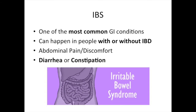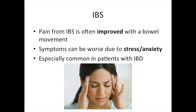Let's talk about IBS first. IBS is one of the most common GI conditions and can happen in people with IBD and in people without IBD. IBS generally manifests as abdominal pain or discomfort that is generally associated with diarrhea or constipation. The pain often is improved or can go away with a bowel movement. These symptoms can often be worse or be precipitated by stress or anxiety. IBS is especially common in patients with IBD.